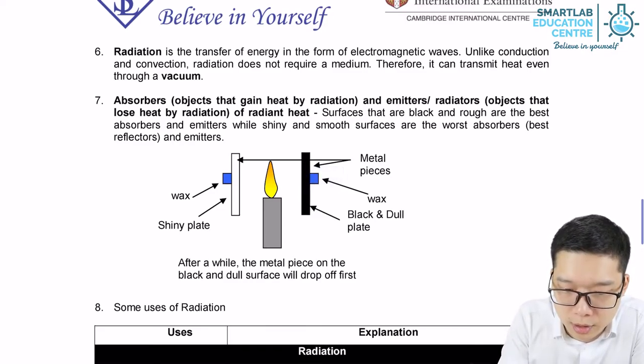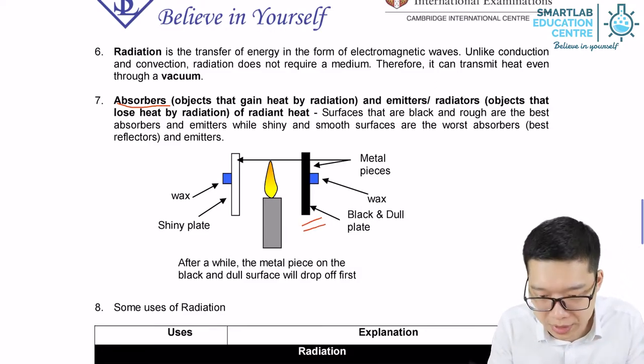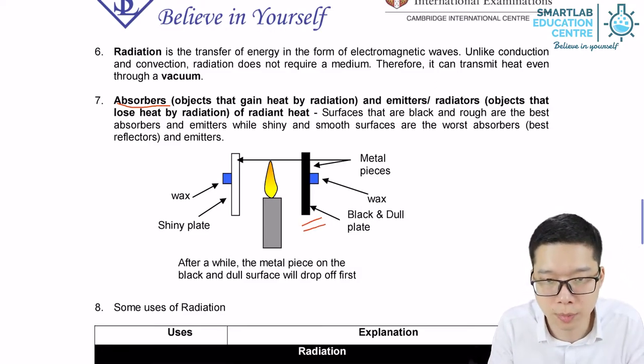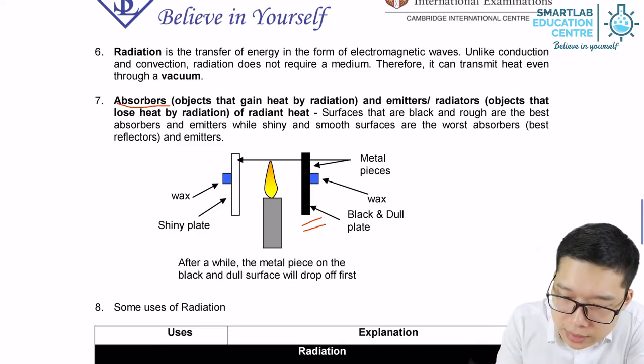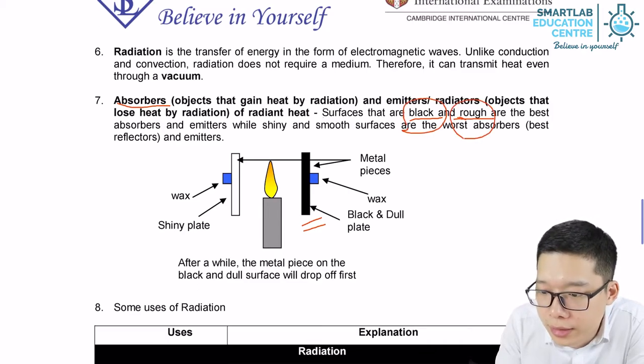So let's talk absorber first. Absorber means a certain object which can absorb radiation faster and more effectively. So black, rough, darker color, rougher surface.